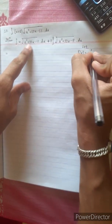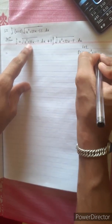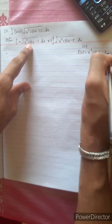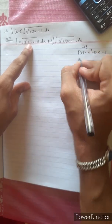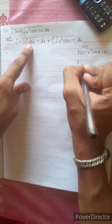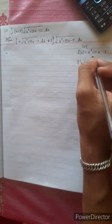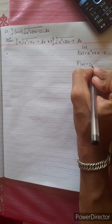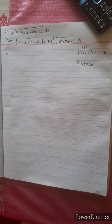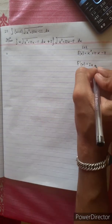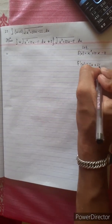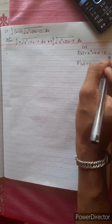f'(x) is equal to x squared plus 10x minus 11. f'(x) is the derivative. x squared has derivative 2x. 10x has derivative 10. Minus 11 has derivative 0.